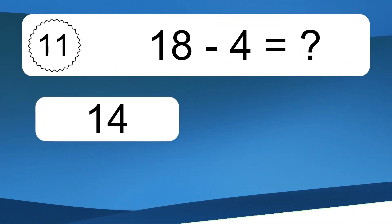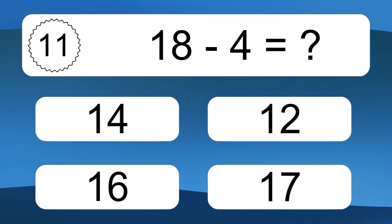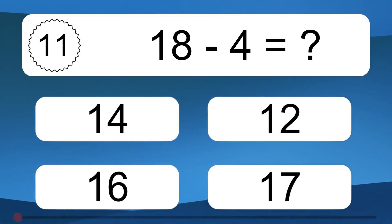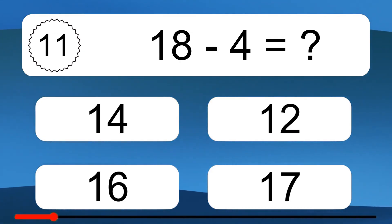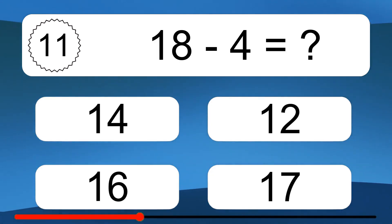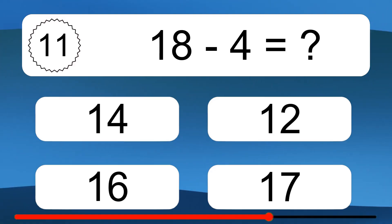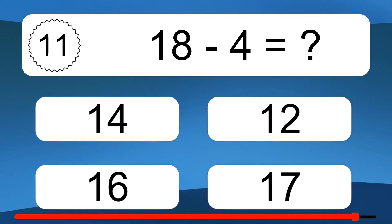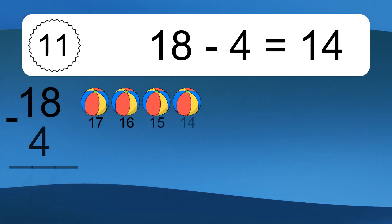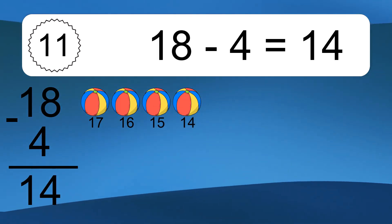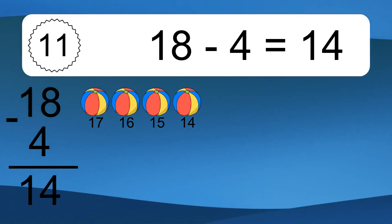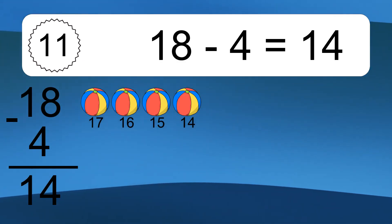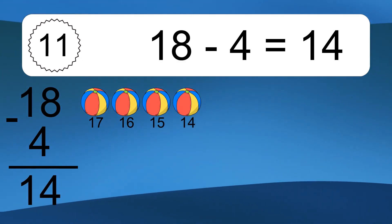18 minus 4 equals what? 18 minus 4 equals 14. Let's count it: 17, 16, 15, 14.